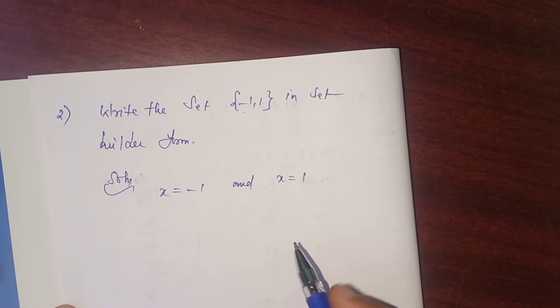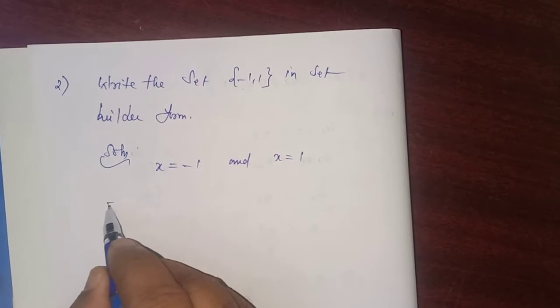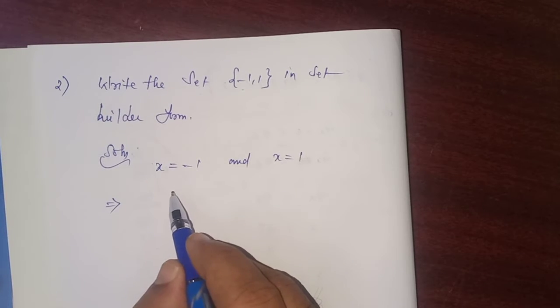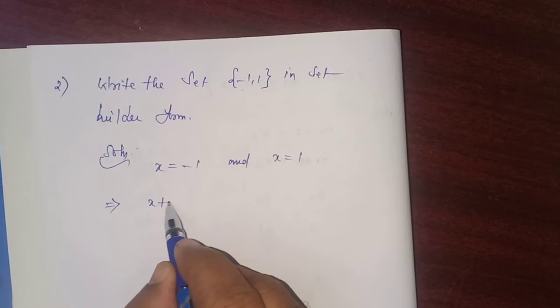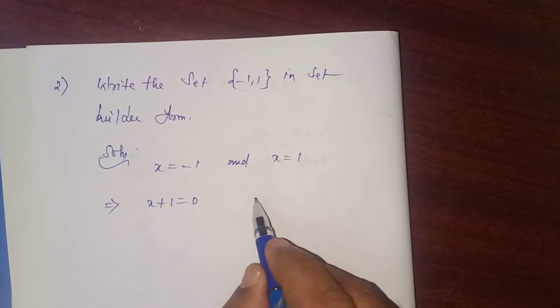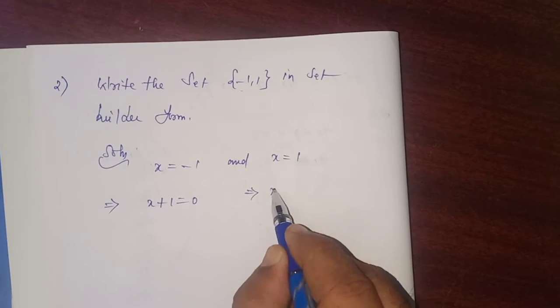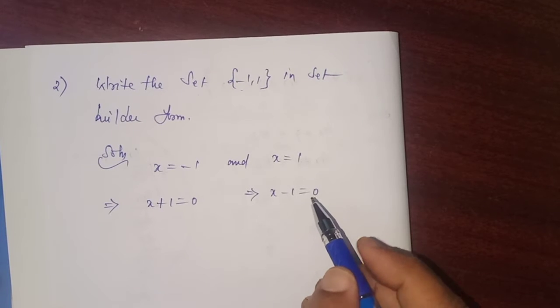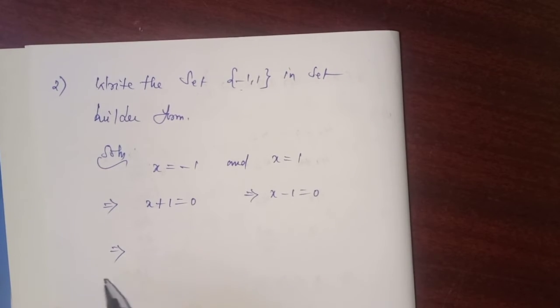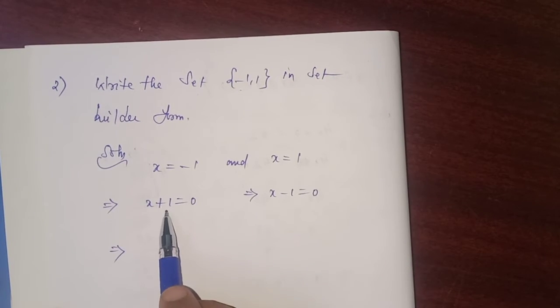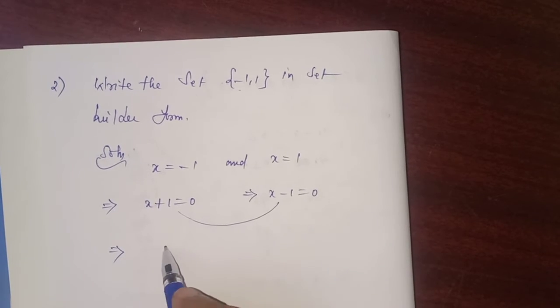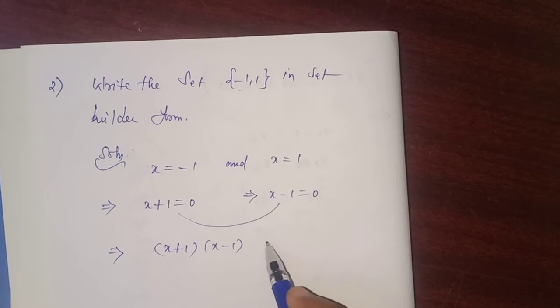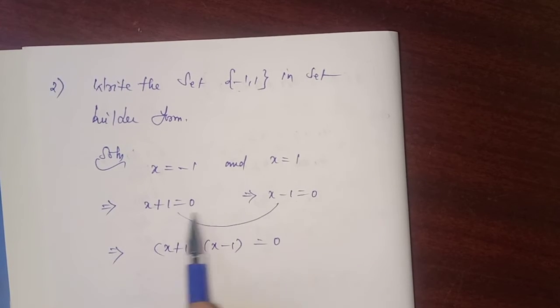Which implies x + 1 = 0 and x - 1 = 0. Together we can write (x + 1)(x - 1) = 0. I have multiplied both sides. This is of the form (a + b)(a - b).